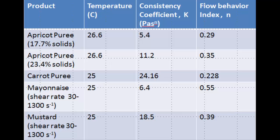So, here we have some k and n values for different food products. You will note that in case of apricot puree, as the solids increase, the consistency coefficient k also increases from 5.4 to 11.2 Pascal seconds raised to power n.